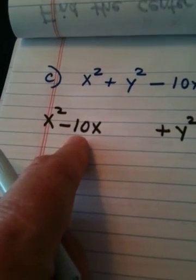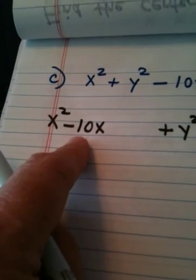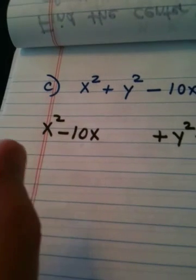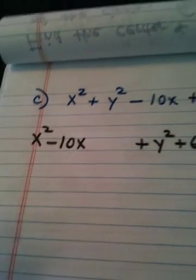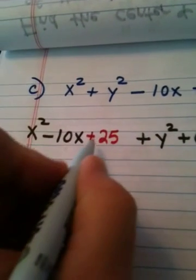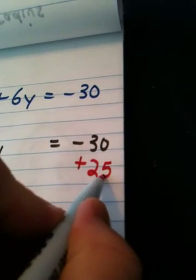What I want you to do next is take half of the number negative 10 in your mind and then square it. Half of negative 10 is negative 5. Negative 5 squared is 25. What I add to one side of the equation, I add to the other.